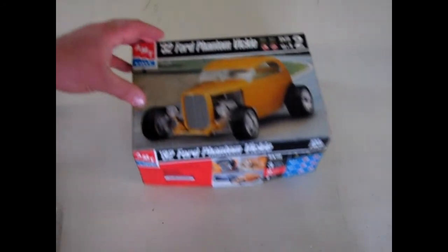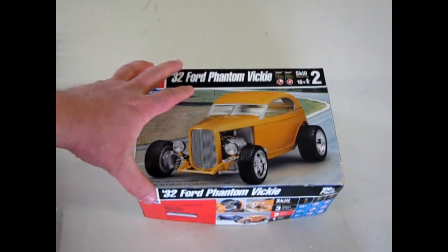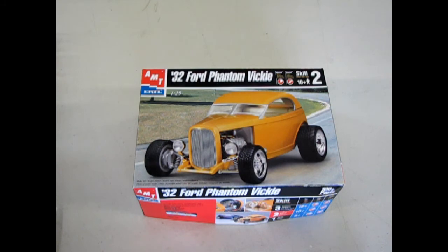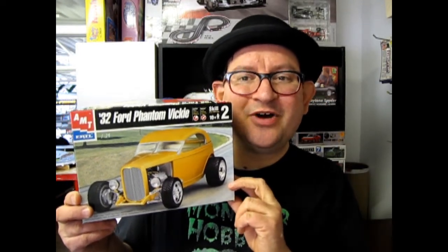And that is the conclusion of our 32 Ford Phantom Vicki kit. Well, we hope you enjoyed that episode of Monster Hobbies What's in the Box? Where we got to open up the lid on the 32 Ford Phantom Vicki kit. And if you would like to see some of the other cars in this series, please check out this video, this video, this video, and that video. And don't forget to subscribe right down here so that we can continue to bring you these amazing model car videos. And until next time, keep it real. Keep it all high.